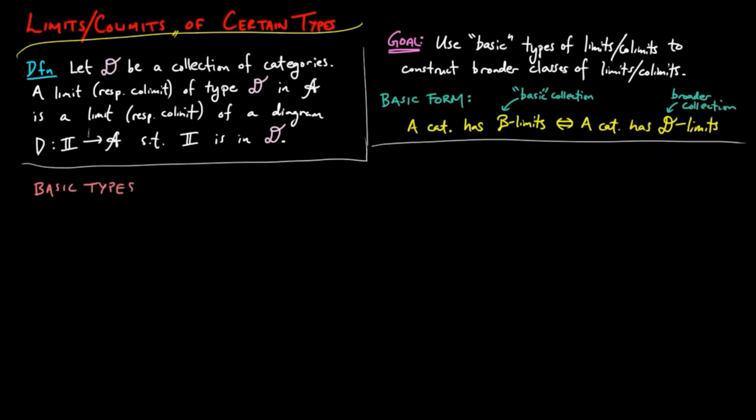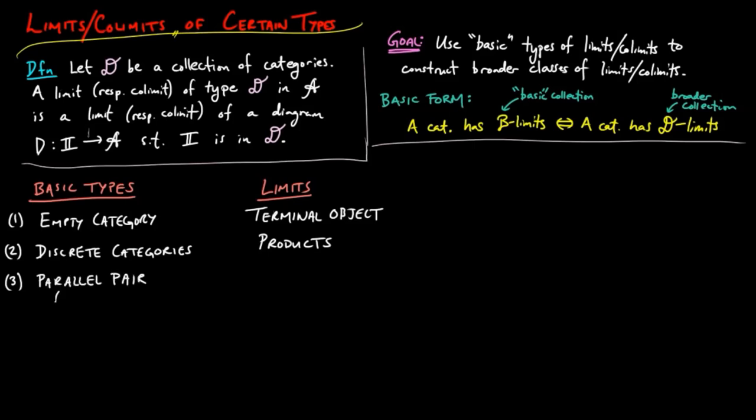The basic types and the corresponding type of limits we will consider are the empty category, which will give rise to terminal objects and categories as their limits, discrete categories, which yield products, the parallel pair category, which leads to equalizers, the co-span category, which will give rise to pullbacks...